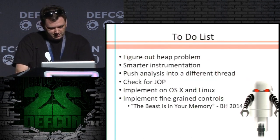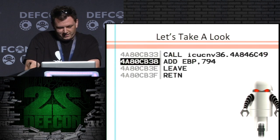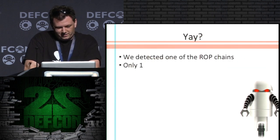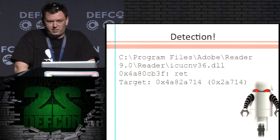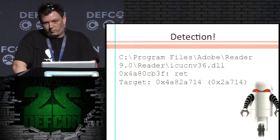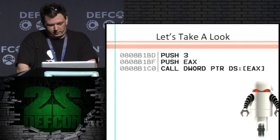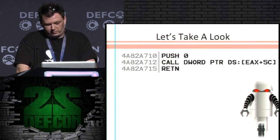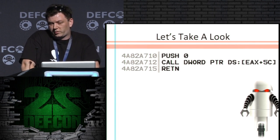I talk fast, I apologize. One thing to note: the ICUCNV36 DLL is used a lot because it's not ASLRed. So in the 9.X series, most attacks against Adobe 9.X will use this. There were also some indirect calls that I could detect — so it wasn't just returns.